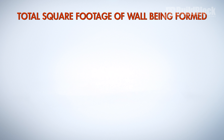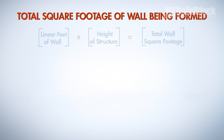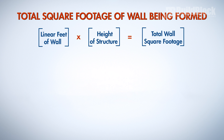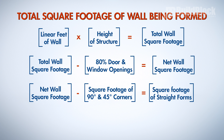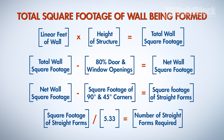To determine the total square foot area of the wall being formed, multiply the linear footage of the structure by the height of the structure. Then subtract 80% of all door and window openings, and subtract the total square footage of all 90 and 45 degree corner forms. Divide the remaining square footage by 5.33 to determine the number of straight forms required. Round up and add a small number of forms for possible waste or mistakes.